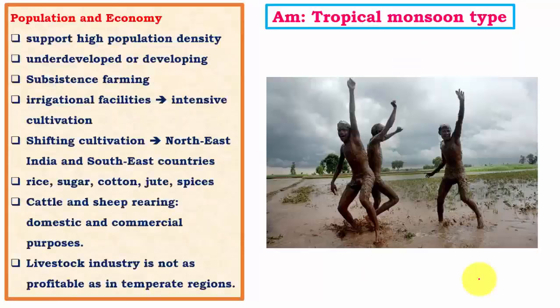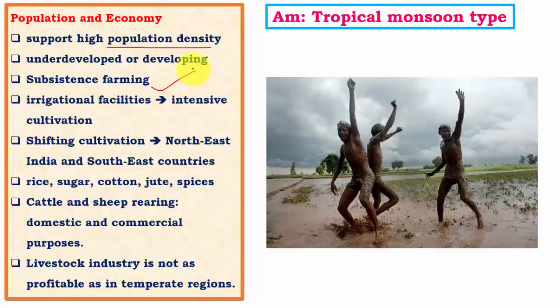This climate supports high population density because the monsoon climate facilitates growth of various crops. In tropical savannah, droughts are very long and soils are lateritic and in poor condition, discouraging farming except a few plantation crops. Tropical monsoon regions have rich soils in most parts, making crop cultivation very intense and population density very high. Most farming is for subsistence — crops grown for domestic purpose only — because the amount of produce is low relative to high population density. Where irrigation facilities are good, crops are grown intensively, as in the Ganga plains and parts of the Brahmaputra delta.